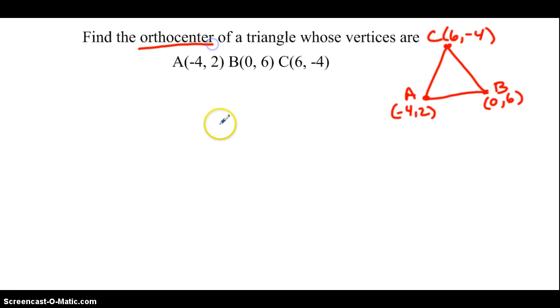And if I want the orthocenter, I'm thinking about altitudes. And altitudes, we should be thinking about perpendicular lines. And when we talk perpendicular lines, we think slopes, perpendicular opposite reciprocal slopes. Now, we only need to be looking at two altitudes because all of the altitudes are concurrent, so we don't need all three, just need two of them.